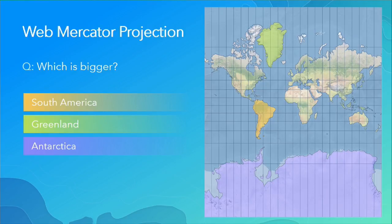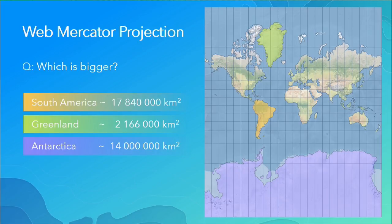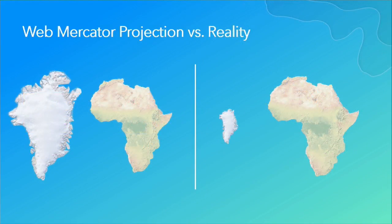For example, in web Mercator — which everybody uses — looking at the map you'd say Antarctica is huge, Greenland is large, and South America is the smallest. But actually South America is 17 million square kilometers, whereas Antarctica is only 14 million and Greenland is very small. Comparing Greenland and Africa in web Mercator, they look approximately the same size, but in actuality Greenland is much, much smaller. So Mercator is not preserving area — it is distorting that value.